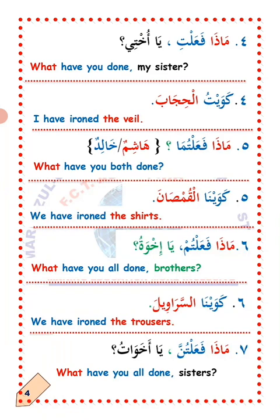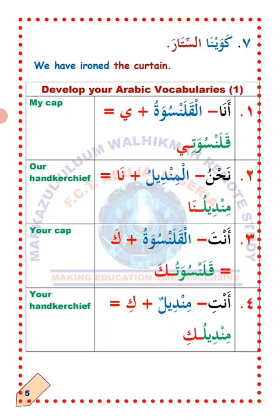From three upwards. Sarawal — mufrad; sarawil — jamu. Sab'a, number seven. Maza fa'altunna, ya akhawat — sisters? Answer: Kawaina al-sitar — we have ironed the sitara, the curtain. La'allaka fahimt? I hope you understand. MashaAllah.